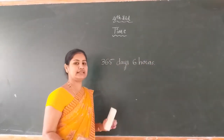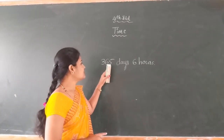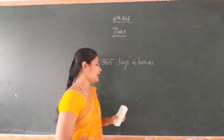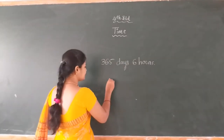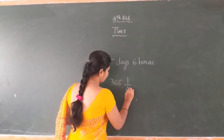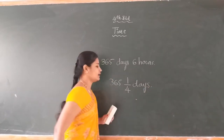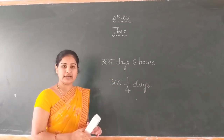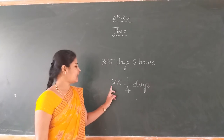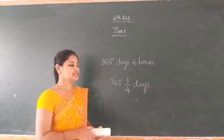Accurately, 1 year has 365 days and 6 hours. It means 365 days, 6 hours. Accurately, 1 year has 365 days, 6 hours.